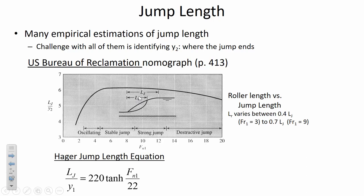To incorporate these calculations into a spreadsheet, a nomograph is a challenge because you're manually eyeballing intercepts. Instead, the book also presents the Hager jump equation, which predicts jump length based on the Froude number and upstream depth prior to the jump. You could draw a curve and see how well the two methods match up.